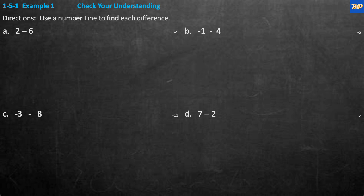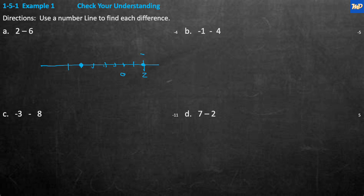For problem A: 2 minus 6. I draw a number line starting at 2 on the right-hand side, since we're going to the left. Starting at 2, we go 6 places to the left: 1, 2, 3, 4, 5, 6. Counting back: negative 1, negative 2, negative 3, negative 4. The answer is negative 4.